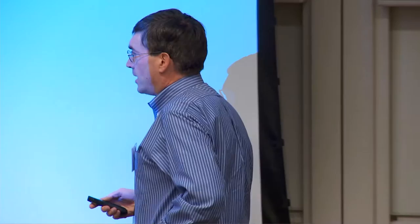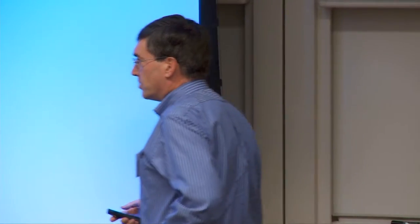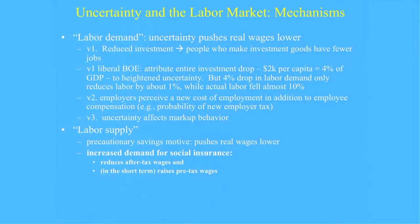On the labor supply side, there are two stories. One is a precautionary savings motive that might, depending on how it shakes out, if people want to work harder, that would tend to push real wages lower. What I'm going to put my attention to today is another labor supply channel where uncertainty increases the demand for social insurance, which reduces after-tax wages but in the short term at least raises somewhat pre-tax wages.